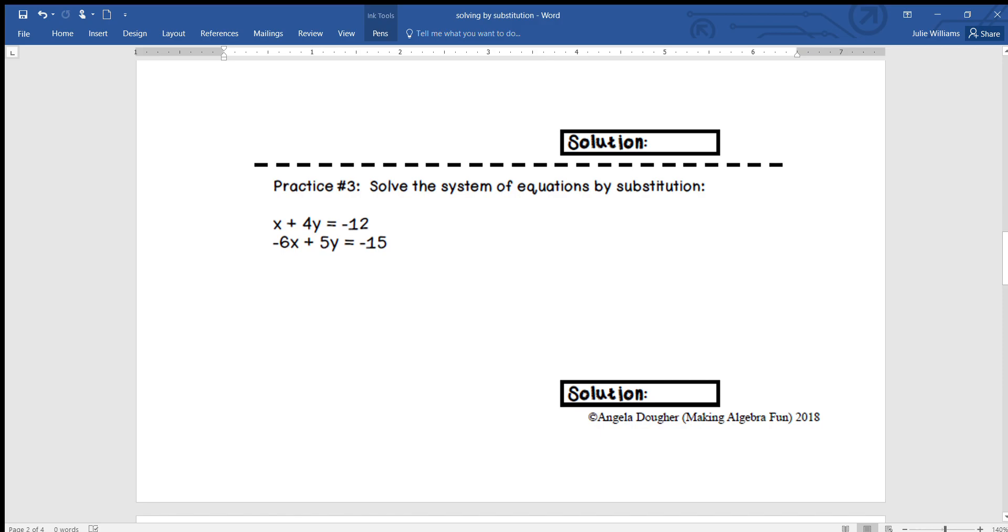Go up here, and so y is going to be equal to 6 times 5, again this here, subtract 33. So y is equal to 30 subtract 33, so y is equal to negative 3. Okay, so that would be my solution. So if I were to graph these guys, remember the graphs would intersect at the point 5 comma negative 3.